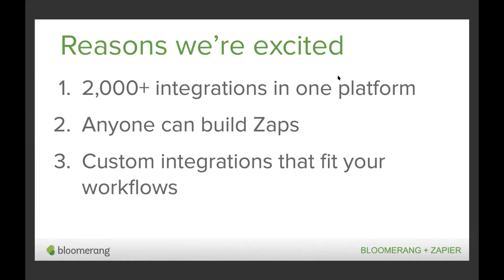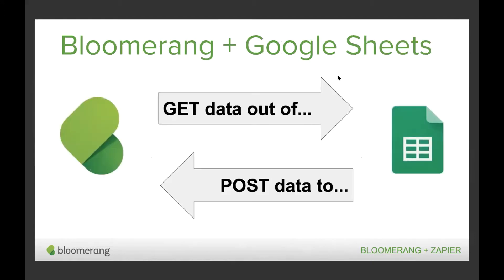Before we dive into the specifics of using Google Sheets to create real-time lists and dashboards, let's talk about how data flows between Bloomerang and Zapier. With Bloomerang-Zapier integrations, you can build integrations with data flowing out of Bloomerang to Google Sheets, and also integrations with data flowing into Bloomerang from Google Sheets — data can flow both directions. Today's webinar focuses on workflows that transfer data from Bloomerang to Google Sheets, but if you watched our previous Academy webinar on mass updates and edits, you saw use cases for syncing data back from Google Sheets to Bloomerang.